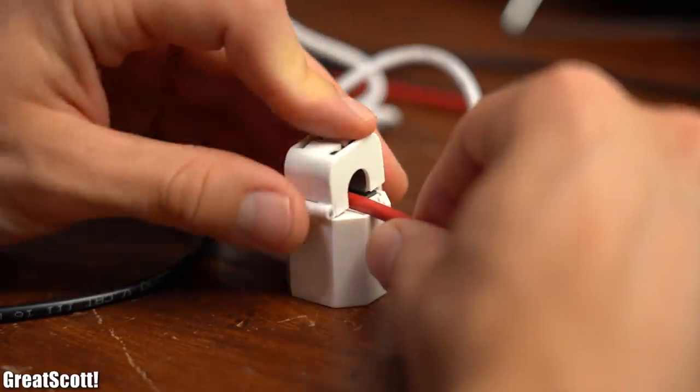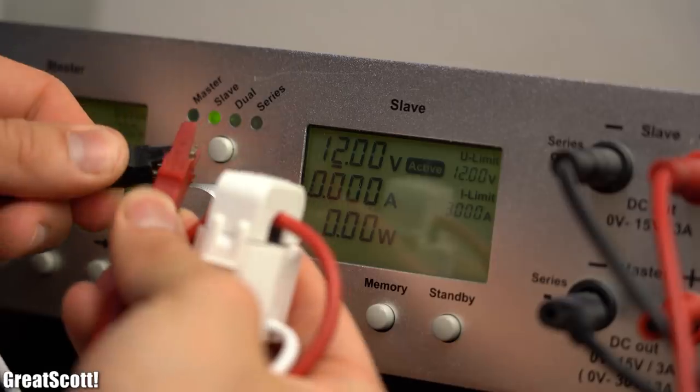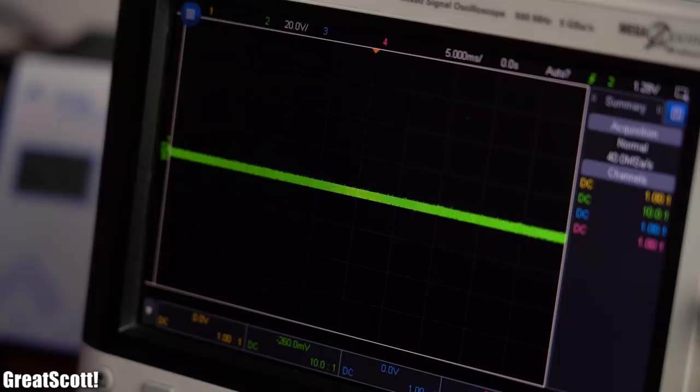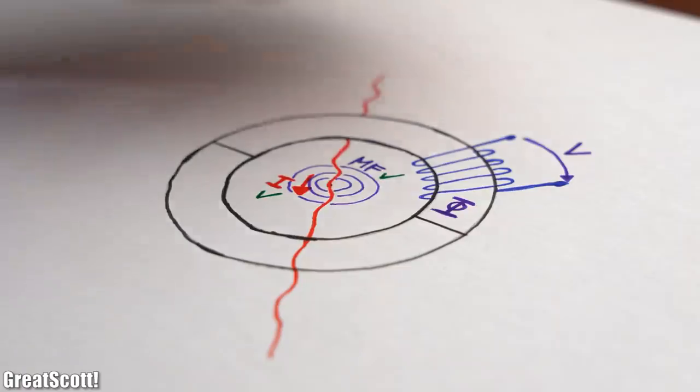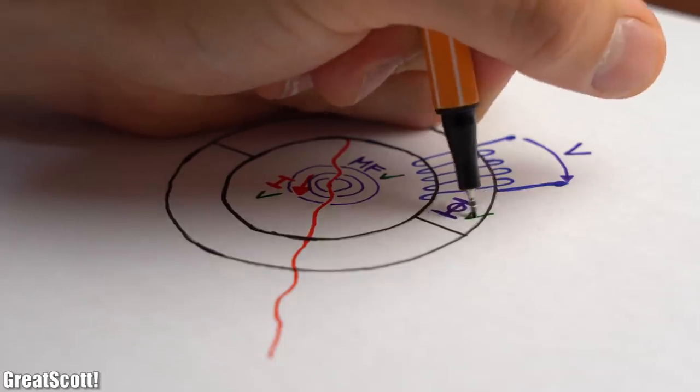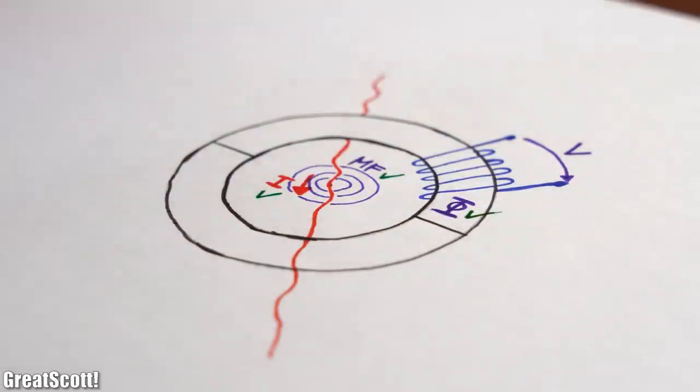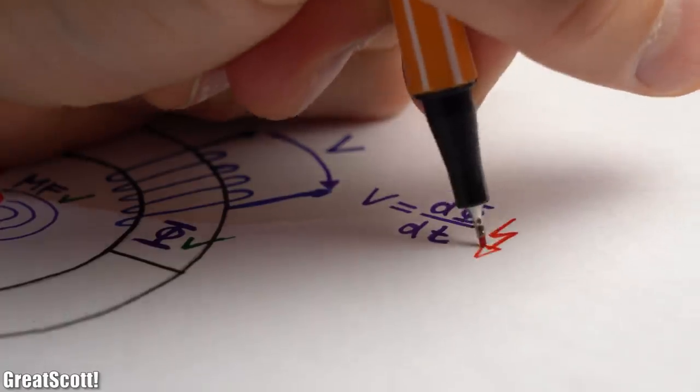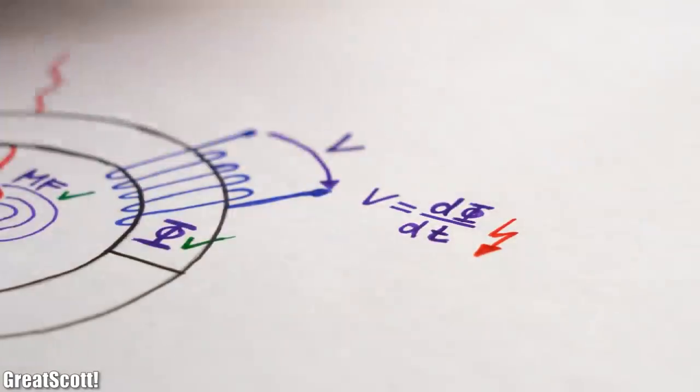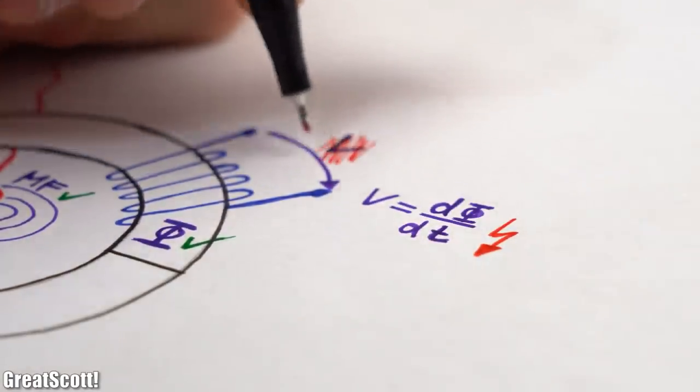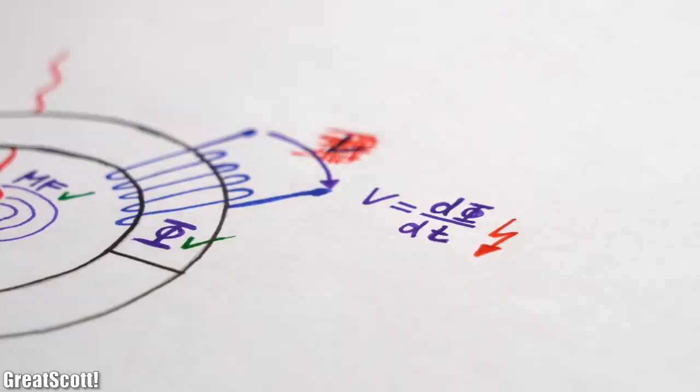The problem however is that as soon as we try to measure a DC current with this setup we get pretty much nothing on the oscilloscope. The problem is that while there still is a magnetic field and also a magnetic flux, it is not constantly changing anymore, which is a requirement for inducing a voltage into the secondary coil.